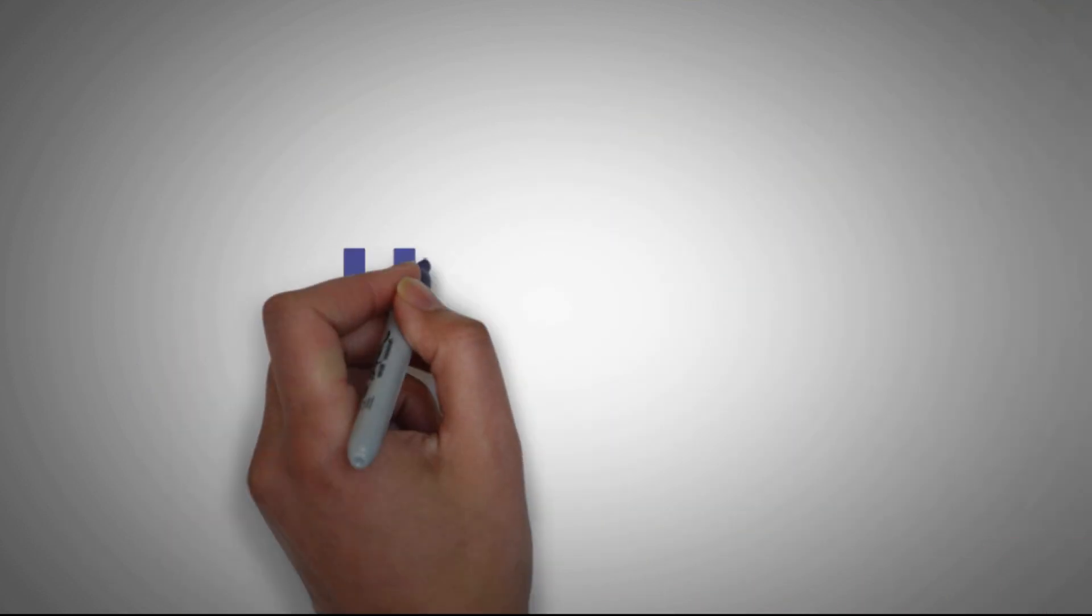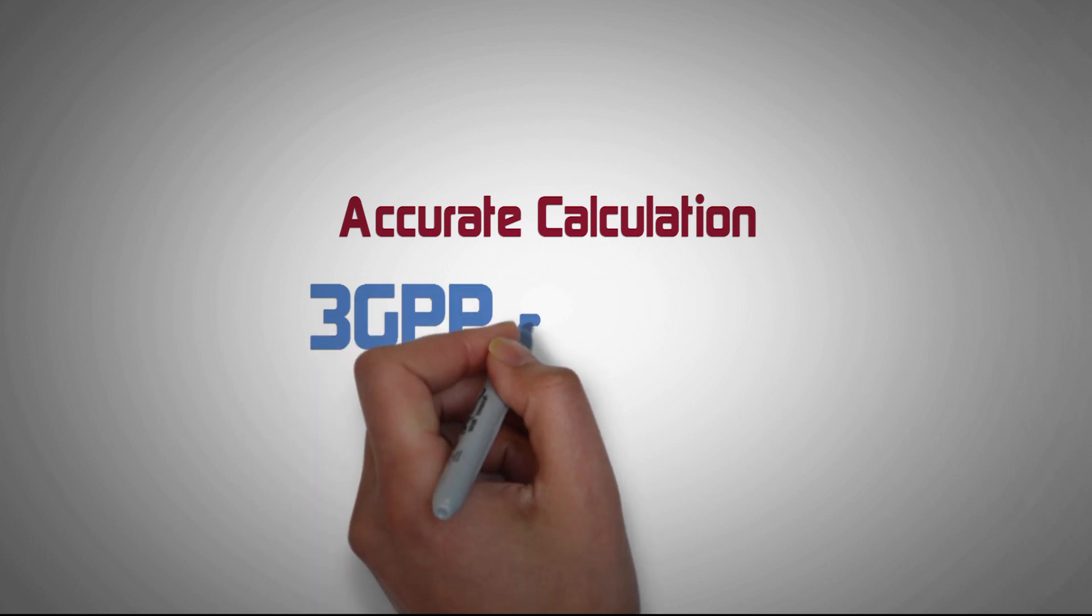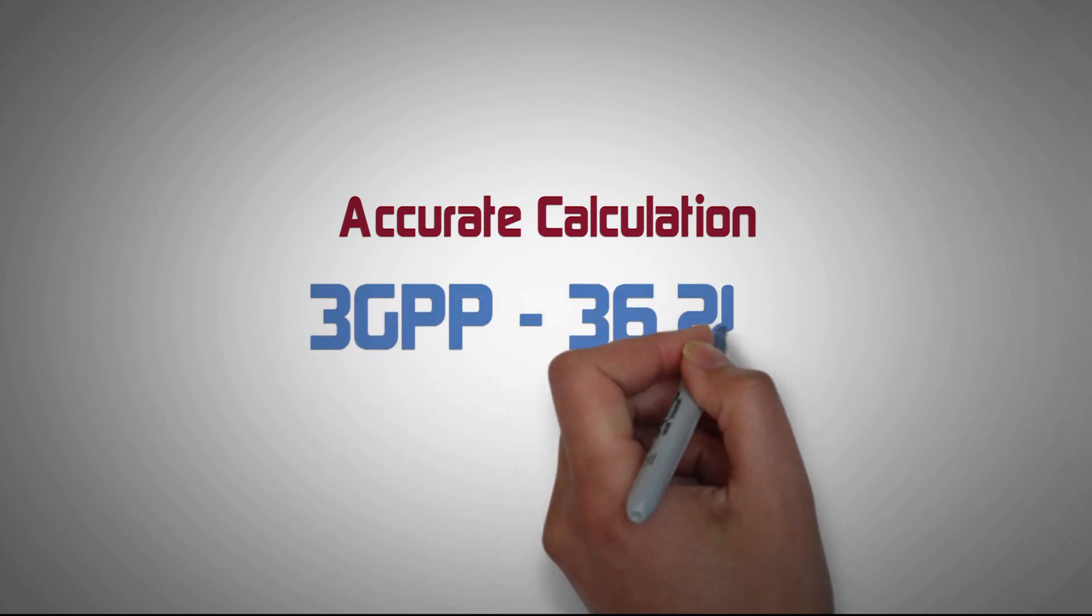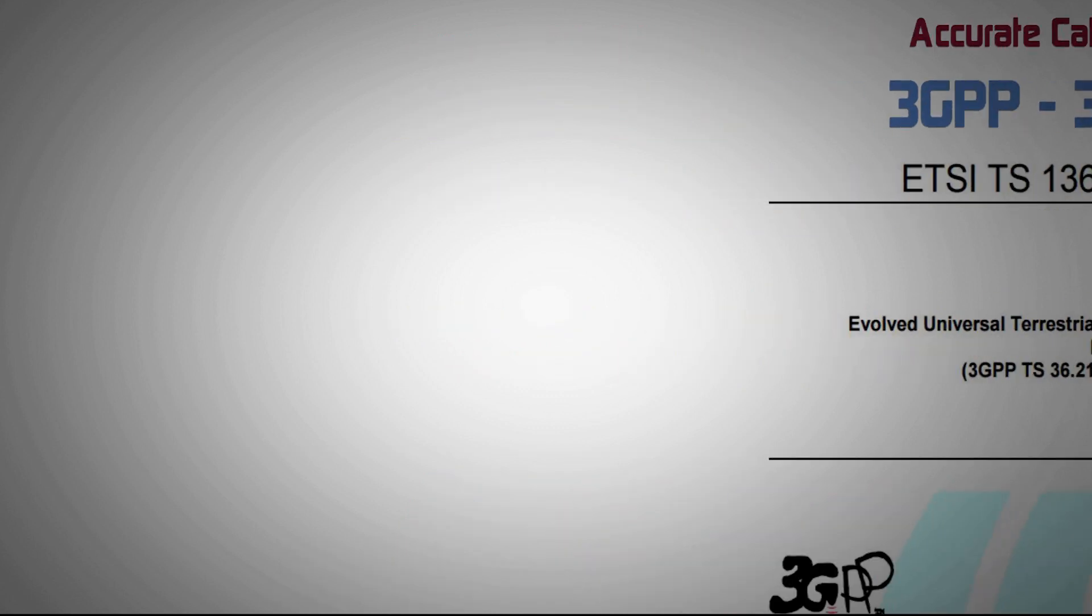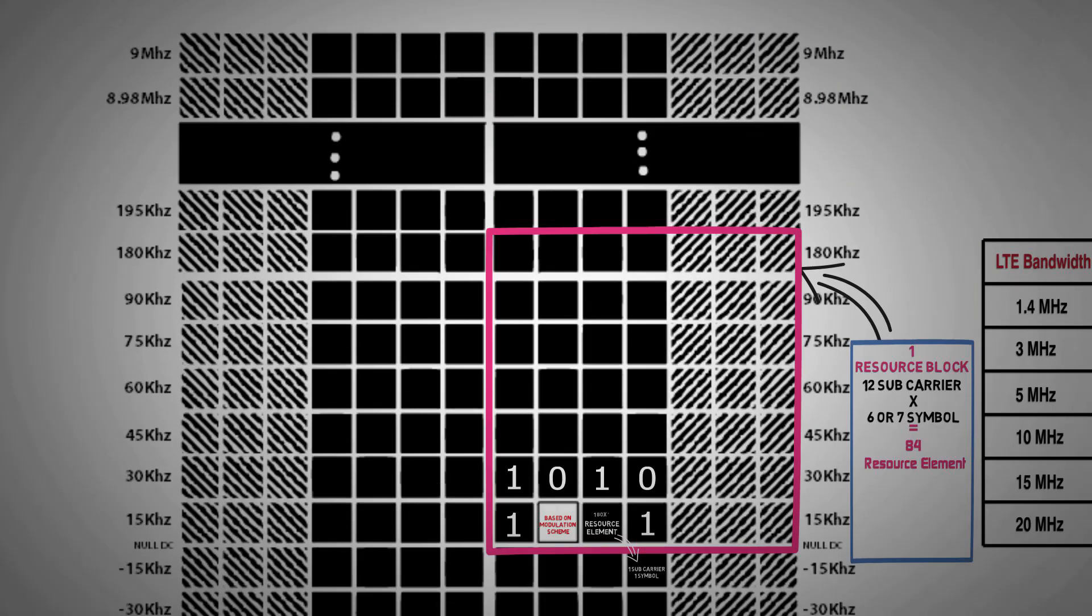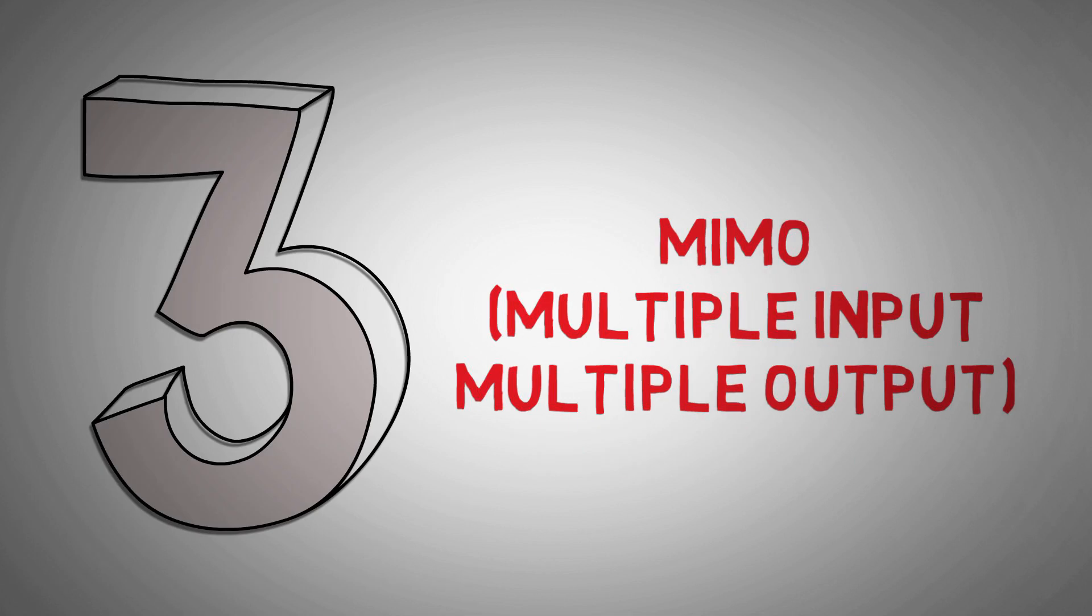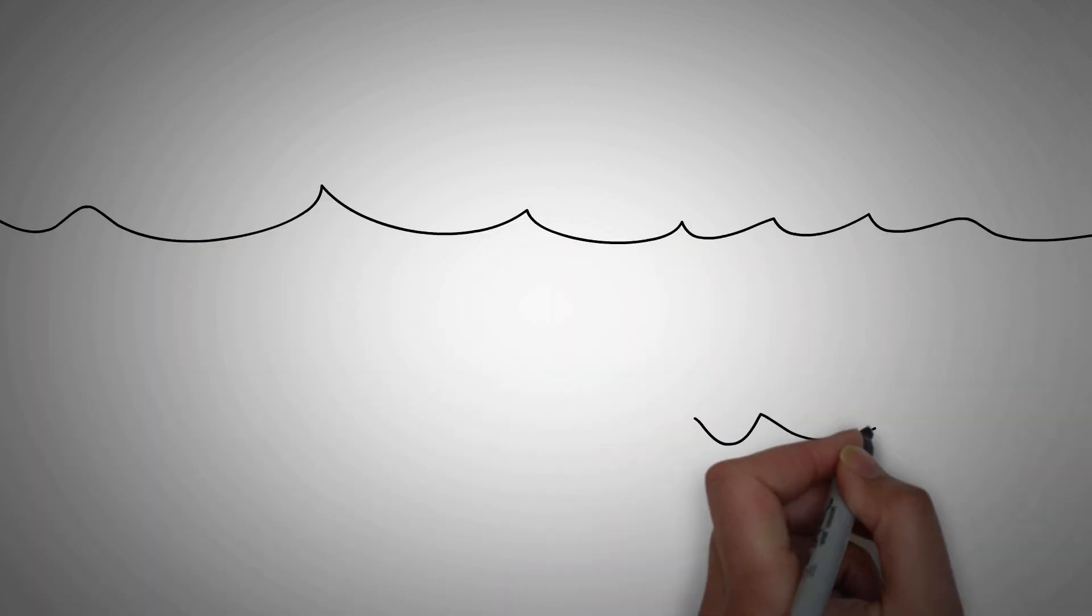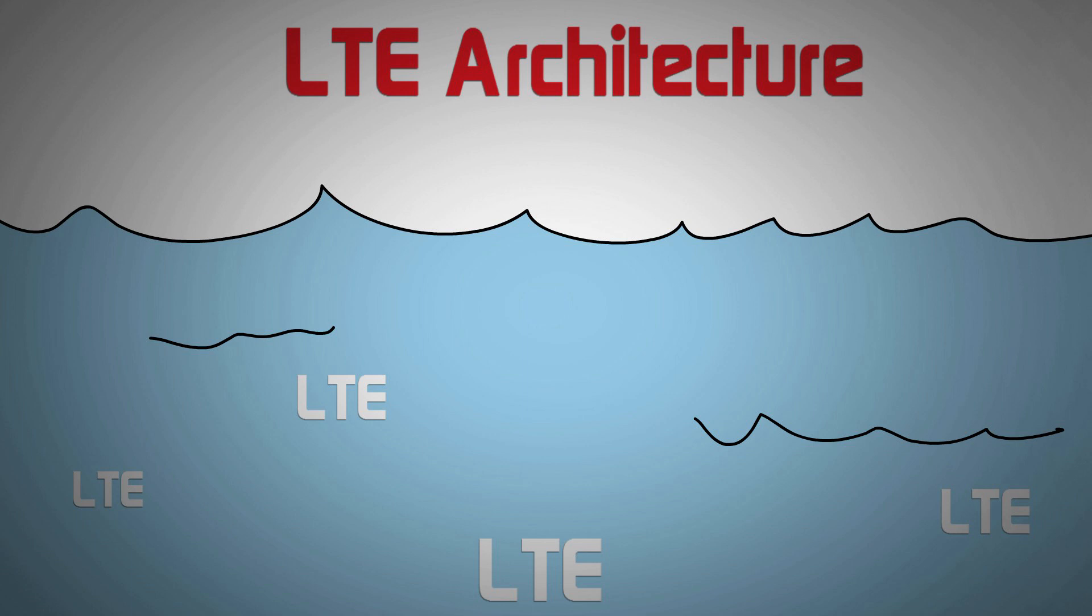In the same way we can calculate throughput for uplink transmission as well. For even more accurate calculation of throughput, you can refer to 3GPP document 36.213, the link to which has been provided in the description section. So today we've seen how throughput is calculated in LTE and how various factors affect the actual throughput that an end user experiences. From our next video we will finally dive deep into the ocean of LTE starting with the architecture. Happy Learning!